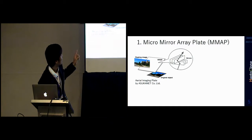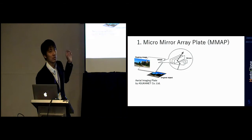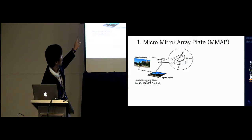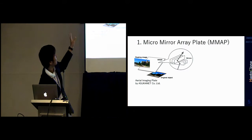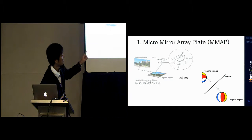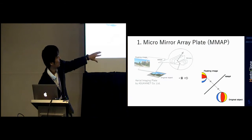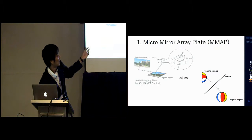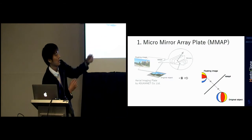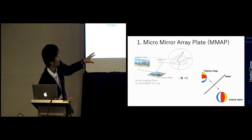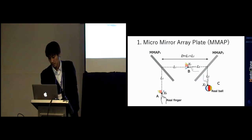The first technology is the micromirror array plate, which is commercially available in Japan. This plate is used for making the floating image. The micromirror array plate is composed of small mirror arrays. When you put a display behind the mirror, the light reflects twice in the mirror and produces the floating image in front of the plate. One interesting thing is that when you put a real object behind the plate, its reproduced image has reversed depth information — the top of the paper ball becomes far and the side becomes near. So when you put a real object, its depth information is flipped.